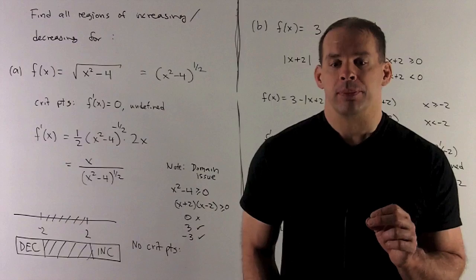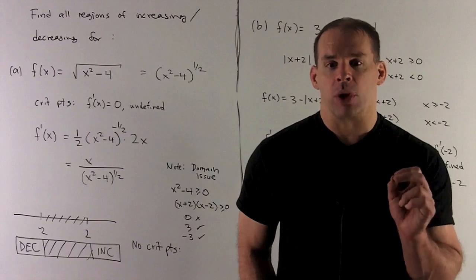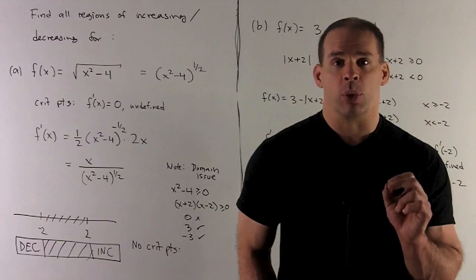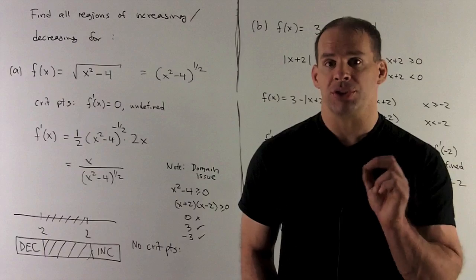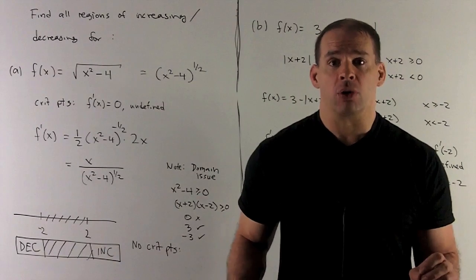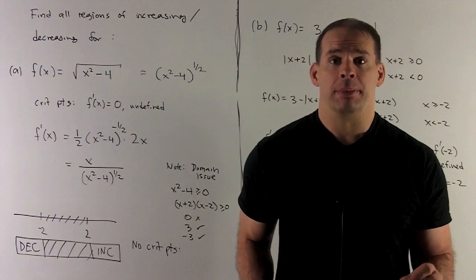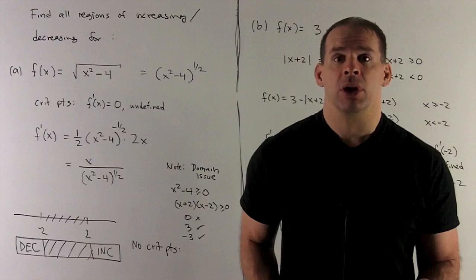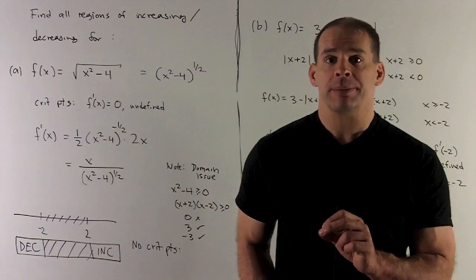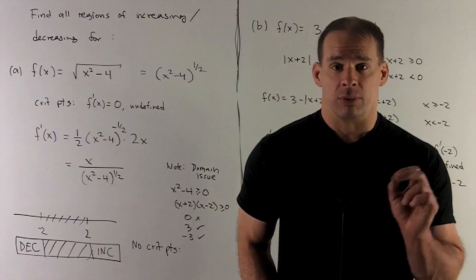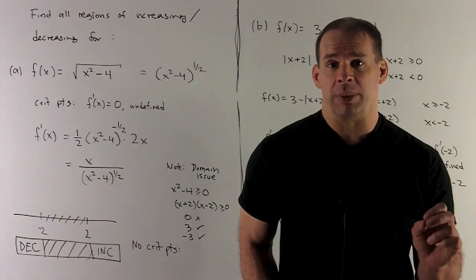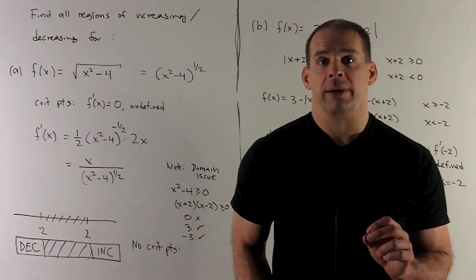To find the domain, we set x squared minus 4 equal to 0, giving us x equals minus 2 and 2. Those points divide the real line into three regions. We'll check the function at a point in each region — if the result is positive we keep it; if negative, we throw it away.